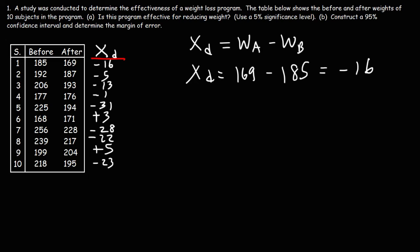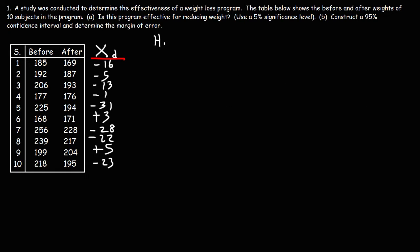We also need to write the null hypothesis and the alternative hypothesis. Think about why this study is being conducted — it's to see if this weight loss program is effective at reducing weight. We want to see if the mean difference is less than zero, because if it's negative, that means the program is effective for decreasing weight. So the null hypothesis has to be the reverse: the mean difference is equal to or greater than zero. Now that we have our null and alternative hypotheses, we can calculate the sample mean of the differences, x bar sub d.